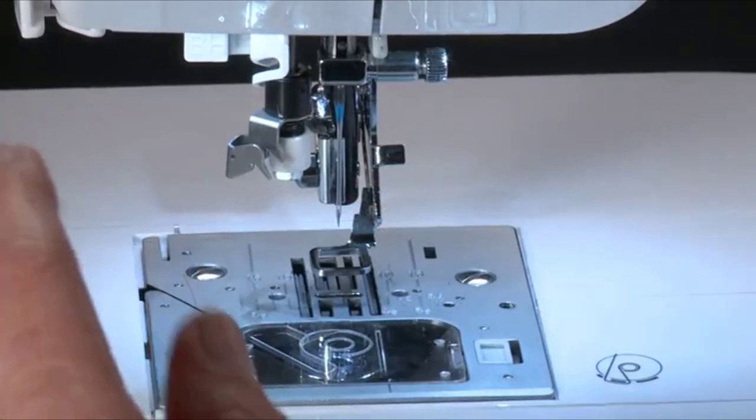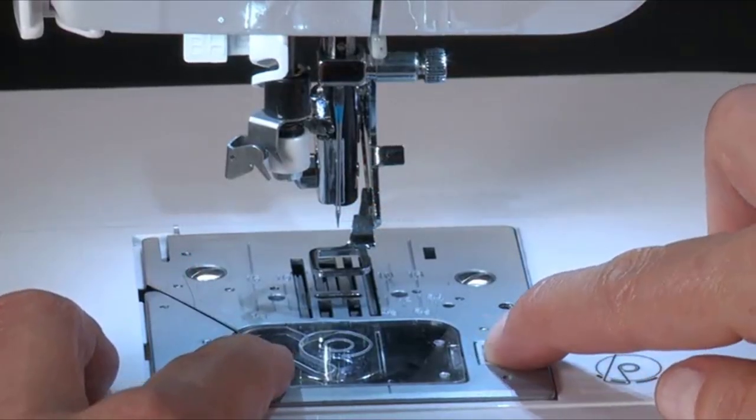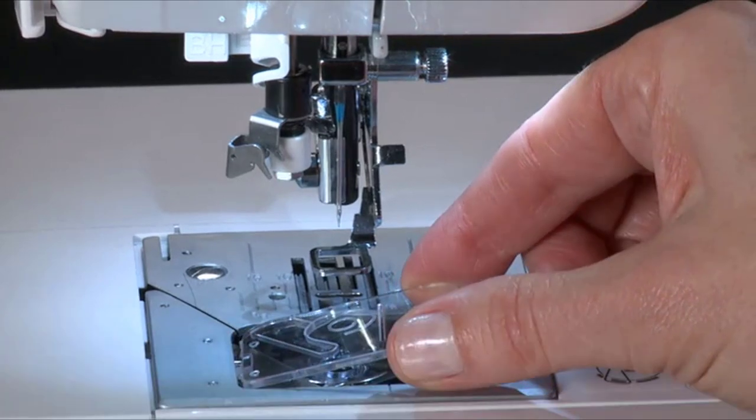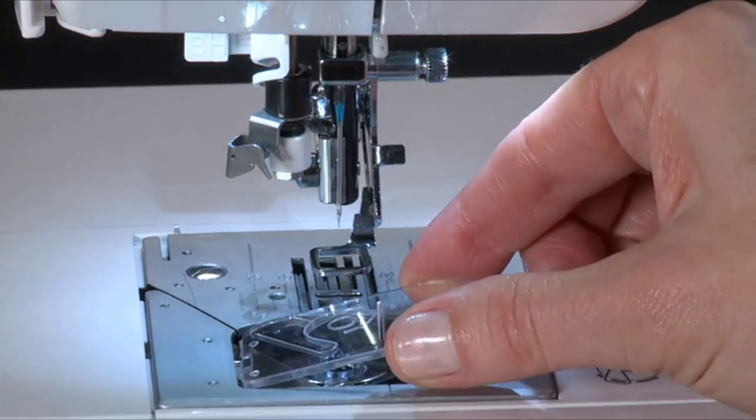Remove the bobbin cover plate by pushing the release button to the right while pushing down on the bottom left corner of the plate. Then remove the cover.